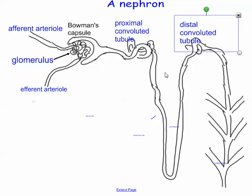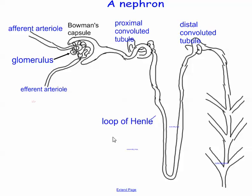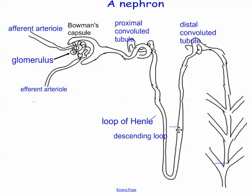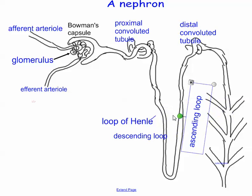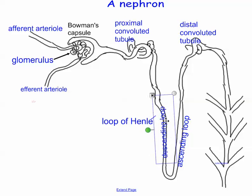Down here you have this trombone-type thing, which is very cool in what it actually does. It's kind of a turning point — a hairpin — but we actually call it a loop, named after this dude, Henle. Loop of Henle. This side, coming down, is called the descending loop — no big surprise. When it's coming back up, it's called the ascending loop.